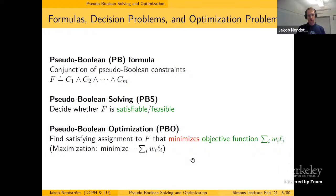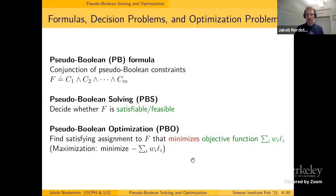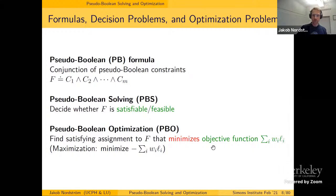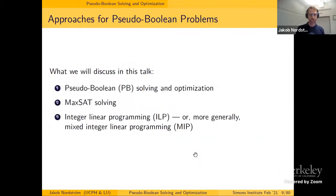A pseudo-Boolean formula is a conjunction or collection of such constraints. There are two problems we can consider: the solving problem, where we determine whether the formula is satisfiable or feasible; and the optimization problem, where we also have an objective function — the sum of W_i · L_i — which we want to minimize. We'll always want to minimize our objective; this is without loss of generality since you can negate the objective to convert maximization to minimization.